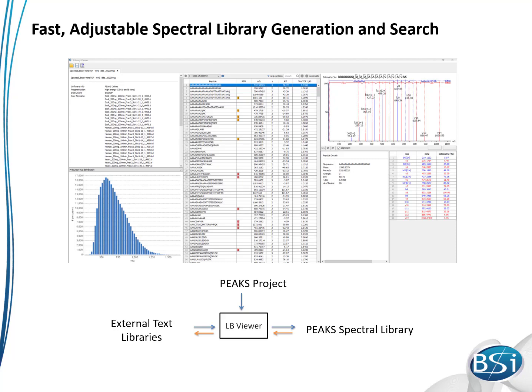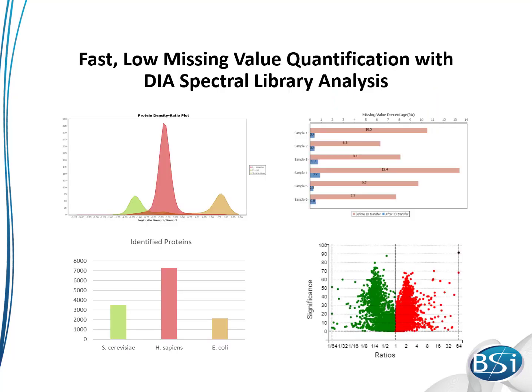Especially with DIA experiments, it is very important to achieve consistent quantification results. So PeaksX Pro focuses on accuracy. With any instrument type, care is taken to avoid missing values. Identified MSMS scans are used to match peptide features from all samples within the experiment, so the final result can have the lowest possible number of missing values.